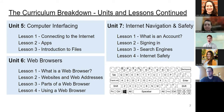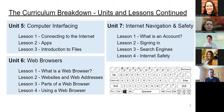Here you see the last three units in the curriculum. Unit five is our computer interfacing: connecting to the internet, using apps, and introduction to files. Unit six is web browsers — what they are and how to use them. Unit seven is actual internet navigation as well as safety, which goes into search engines, account creation, and signing in.